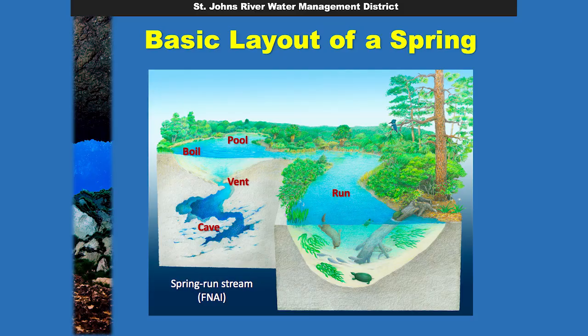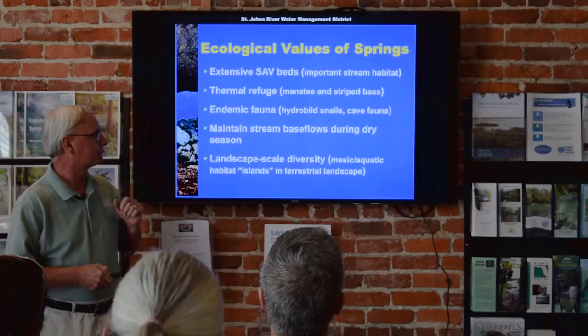Basic layout of a spring: you've got the spring itself, the pool area, which is what we see when we see the spring. Typically one or more vents — the openings in the limestone out of which the groundwater issues. The boil, which technically is the turbulence, the water turbulence over the vents, although some folks refer to the whole head spring as the boil. The run, which if it's long enough usually has a name all its own like Wekiva River or Ichetucknee River. And then some type of a submerged cave system.